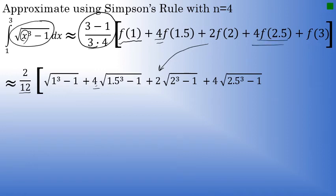Our next to the last term is 4 times the square root of 2.5 to the third minus 1. And the final term, f of 3, there's not a coefficient in front of the first or the last term, it's just the square root of 3 to the third minus 1.